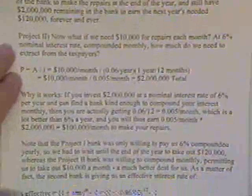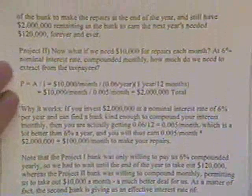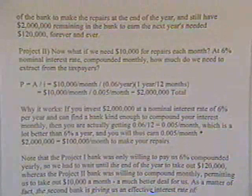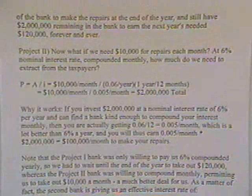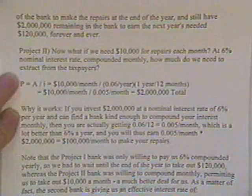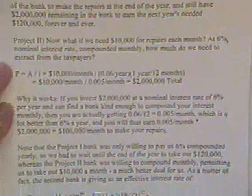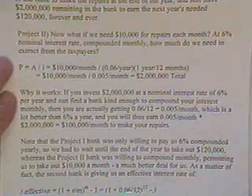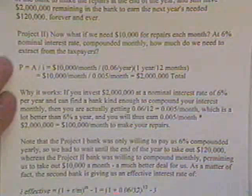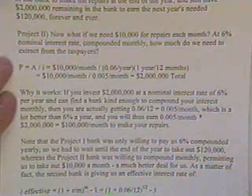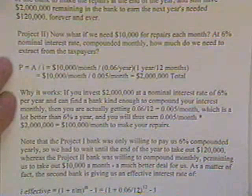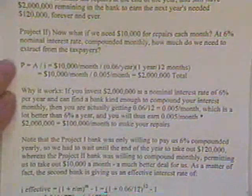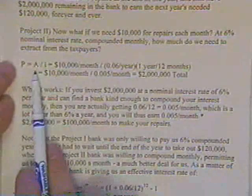Now, so you have a second project. Project 2, we need $10,000 for repairs of something each month. At 6% nominal interest rate, we have got the bank, since we're going to go in the bank every month, we're going to compound monthly. We've got them to agree to that. How much do we need to extract from the taxpayers?